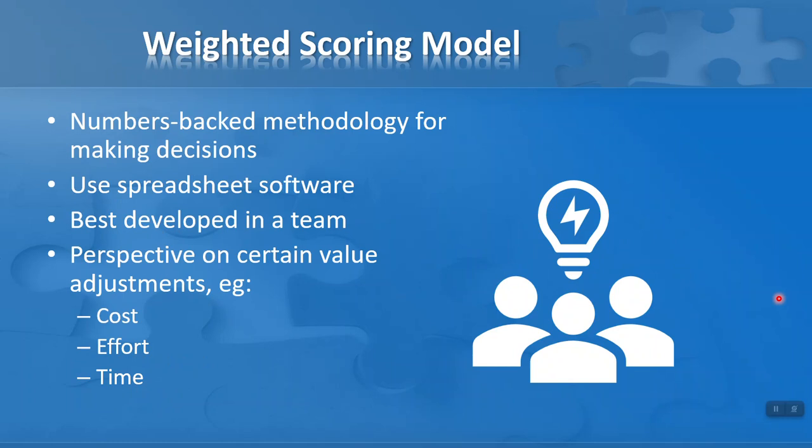The weighted scoring model is a numbers-backed methodology for making decisions, similar to cost-benefit analysis. We use simple spreadsheet software such as Google Sheets or Excel. I find it's best developed in a team. If you get a group of people together, developing it in a team is a better idea because we can get different perspectives on certain value adjustments, such as the cost, effort, and time involved with different solutions.